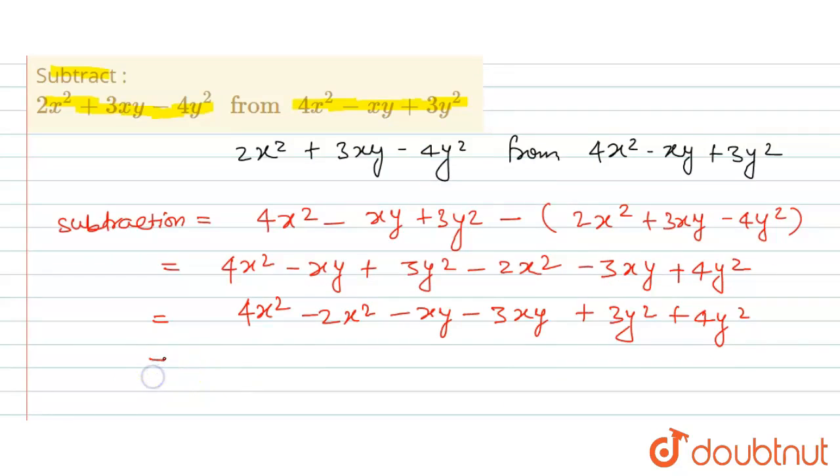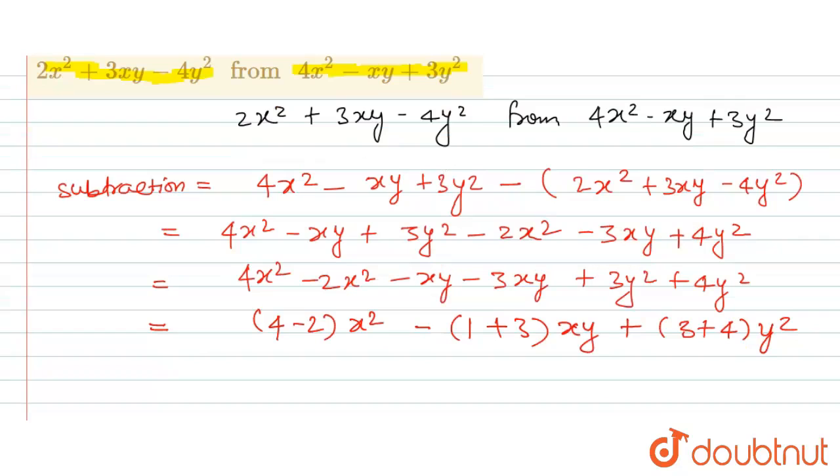We simplify the coefficients. For x², the coefficient is 4 minus 2. For xy, we have minus 1 and minus 3, taking out the minus sign. For y², the coefficients are 3 plus 4.